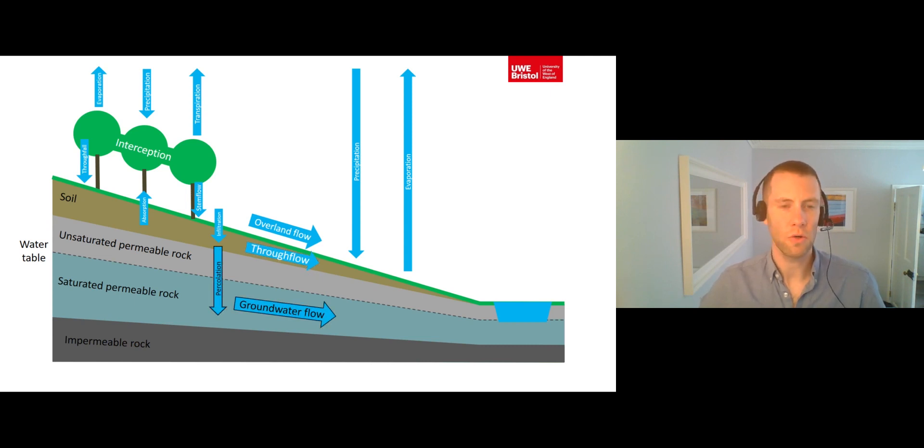Water within the soil can also keep infiltrating downwards until it reaches the bedrock underneath. If it reaches permeable bedrock, such as chalk, then it will continue to move slowly downwards through the rock through the process of percolation.